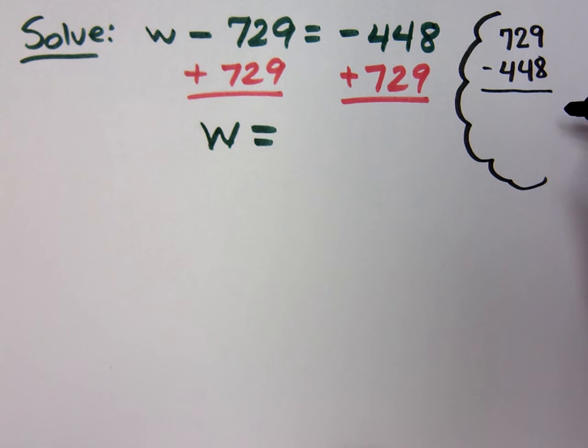Show the work on your paper. That way I can see what you're doing. If you make a small mistake, it won't hurt as much, as opposed to you not having any work at all. So 9 minus 8 is 1, and the 72 minus 44 is going to give you 28.